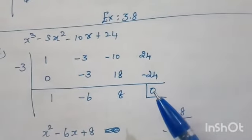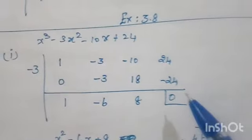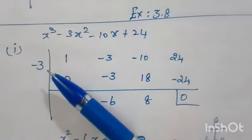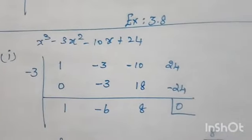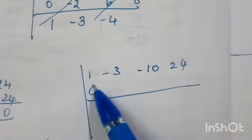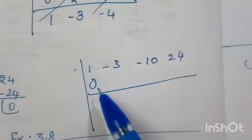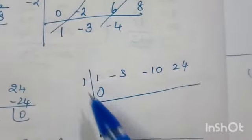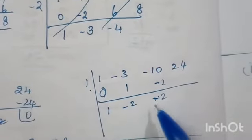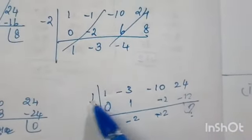First, write the coefficients, then try substituting 1. Use a pencil while checking. For 1: bring down 1, multiply 1 into 1 is 1, add to minus 3 gives minus 2, multiply 1 into minus 2 is minus 2, add to minus 10 gives minus 12, multiply gives minus 12. We did not get remainder 0, so 1 is not a factor. Try minus 1: we get minus 4, then minus 6 — again not 0, so minus 1 is not a factor either.